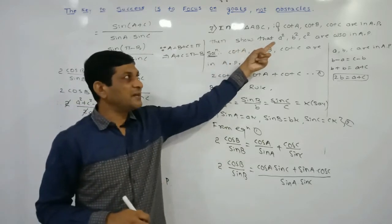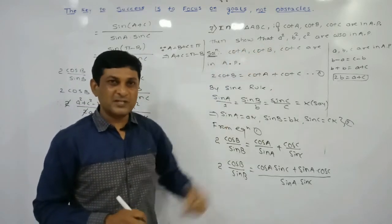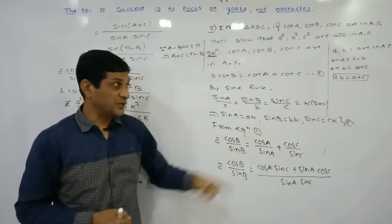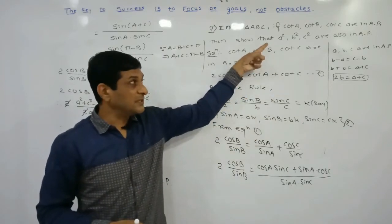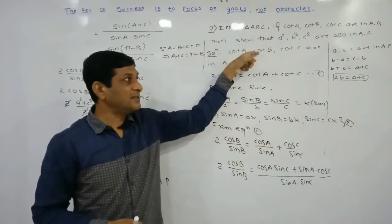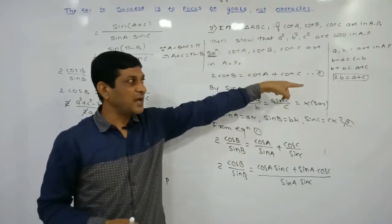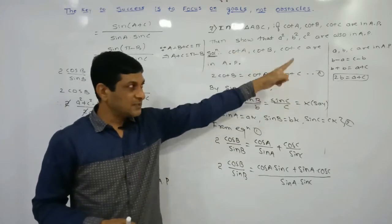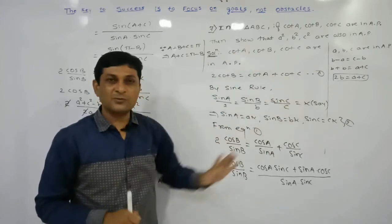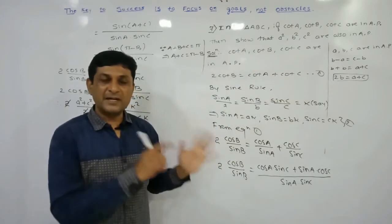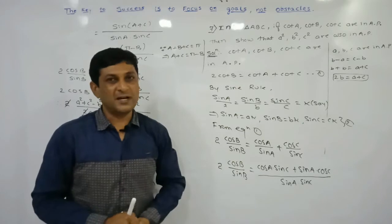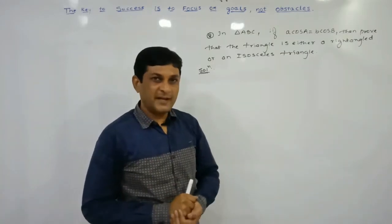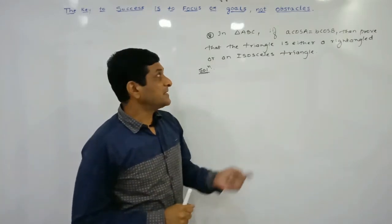Hence we have proved that a², b², c² are in arithmetic progression. To solve this example, knowing the AP condition 2b = a + c (or here 2b² = a² + c²) was essential. Now let us see Example 8.